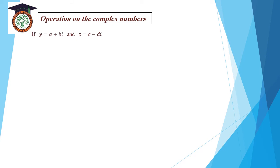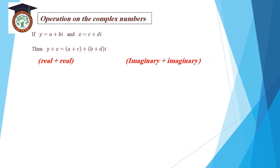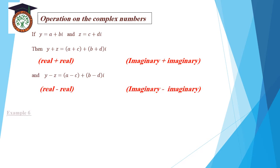Operations on complex numbers. If Y equals a plus bi and Z equals c plus di, then Y plus Z equals (a plus c) plus (b plus d)i — real plus real, and imaginary plus imaginary. Y minus Z equals (a minus c) plus (b minus d)i — real minus real, imaginary minus imaginary. Example 6: (3 plus 7i) plus (5 minus 9i). 3 plus 5 equals 8, and 7i minus 9i equals negative 2i. Answer: 8 minus 2i.